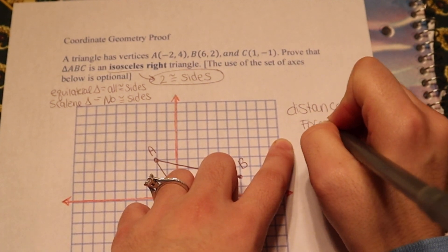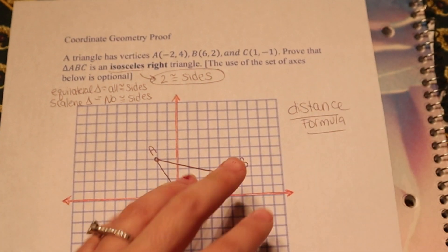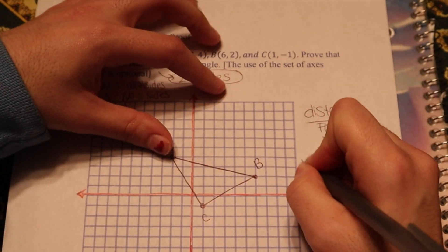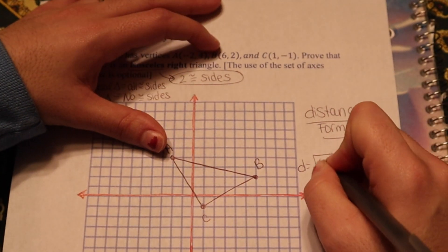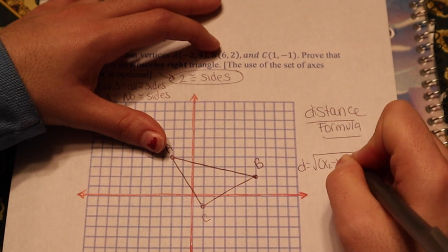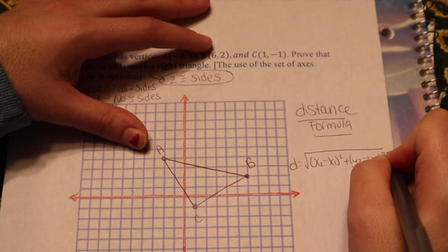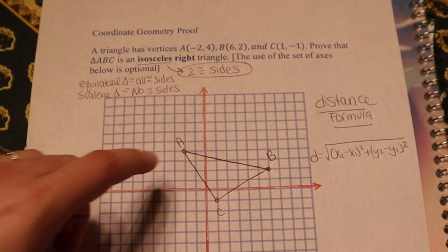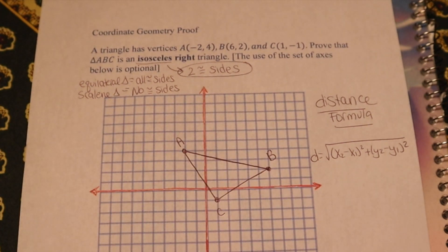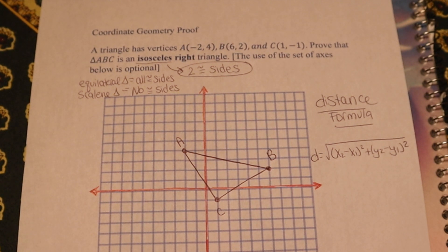To recall, I'm going to write the distance formula down. The distance formula is d equals the square root of x2 minus x1 squared plus y2 minus y1 squared. We have to go through all three pairs of sides. And if we're lucky, we'll get two that are equal right off the bat. But if not, then we're going to have to just do the third side.